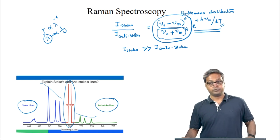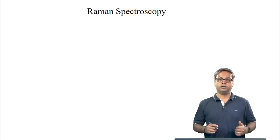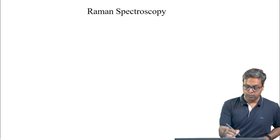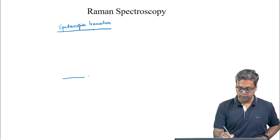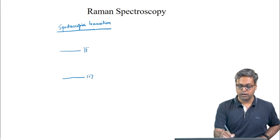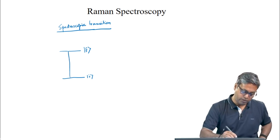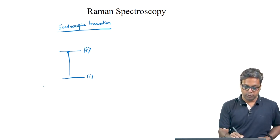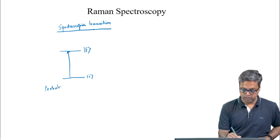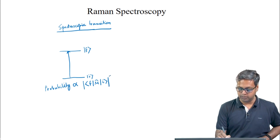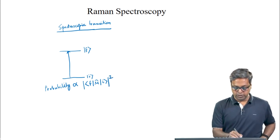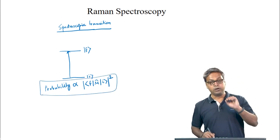The mechanism of Raman transition is different from that of a spectroscopic transition. For a spectroscopic transition, we have an initial state and a final state, and the probability of this transition is proportional to |⟨final|μ̂|initial⟩|², which is the transition dipole moment.